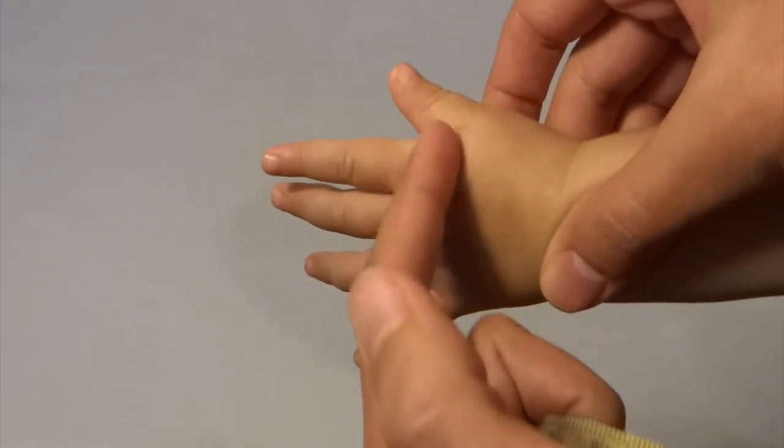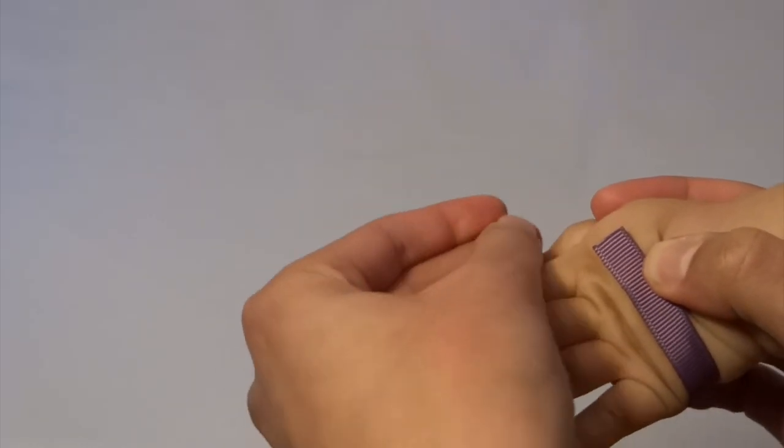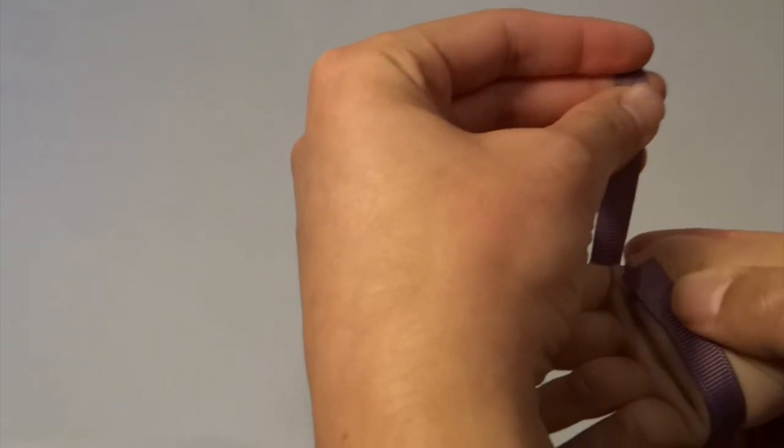If you do not have measuring tape, you can use a taut ribbon. You can then measure the ribbon's length with a ruler to give you the circumference.